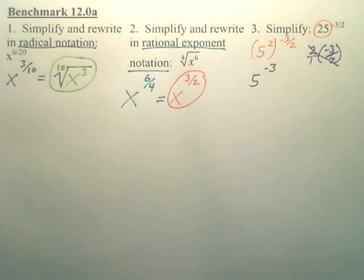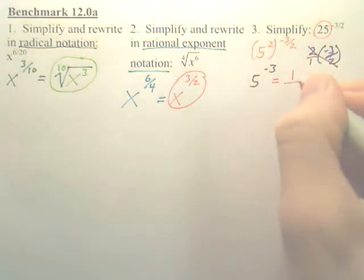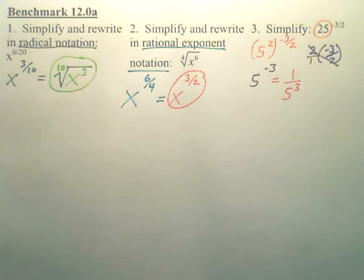Next step is we're not allowed negative powers. So we drop it. Negative powers, according to our properties, drop to the denominator. So we now have 1 over 5 to the 3rd.